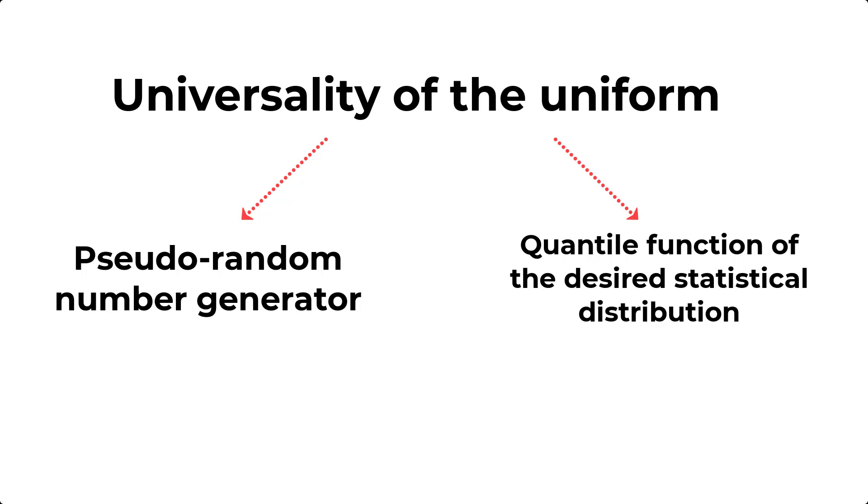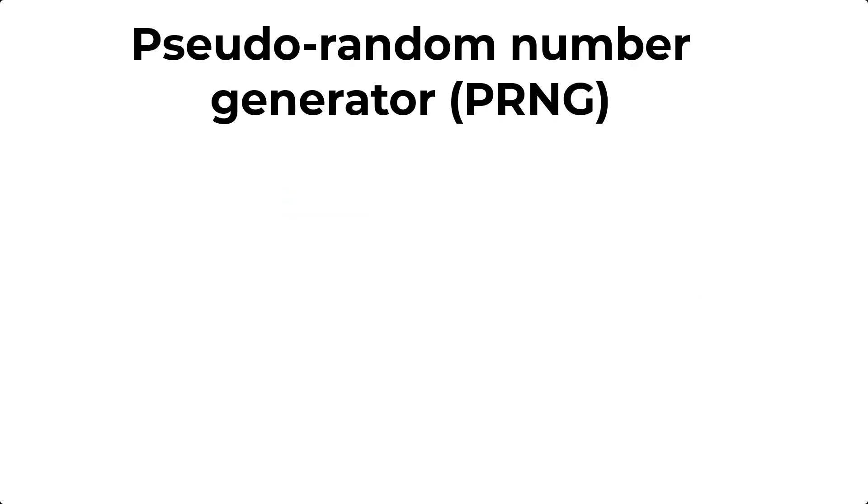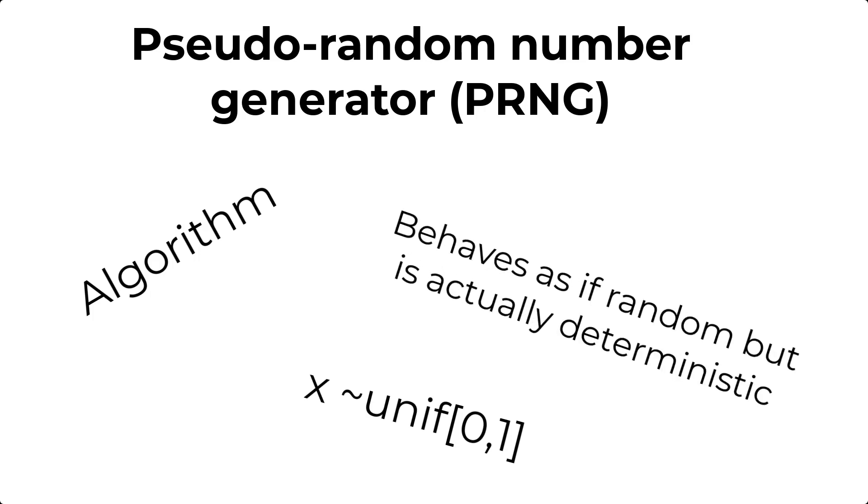Let us just provide some quick details about these two inputs before we move over to the spreadsheet. And let's start with the pseudo-random number generator. The pseudo-random number generator is essentially just an algorithm which produces numbers which are uniformly distributed and are bounded between 0 and 1. And these numbers, they behave as if they are random. But in actuality, they are perfectly deterministically determined, hence why we call them pseudo-random.